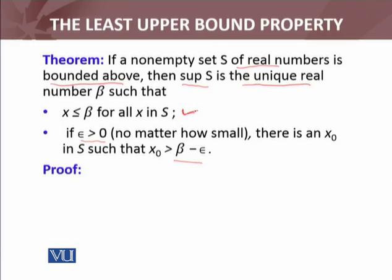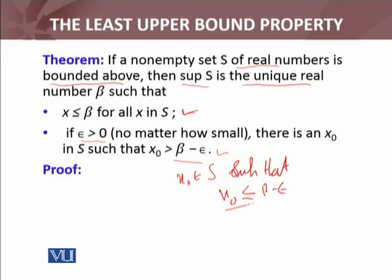The first condition of the theorem is satisfied by definition. For the second condition, suppose it is not true — that is, there exists no x₀ in S greater than β − ε. Then β − ε would be an upper bound smaller than β, since β − ε < β. But that would give us a smaller upper bound, which is not possible by the definition of supremum as the least upper bound.